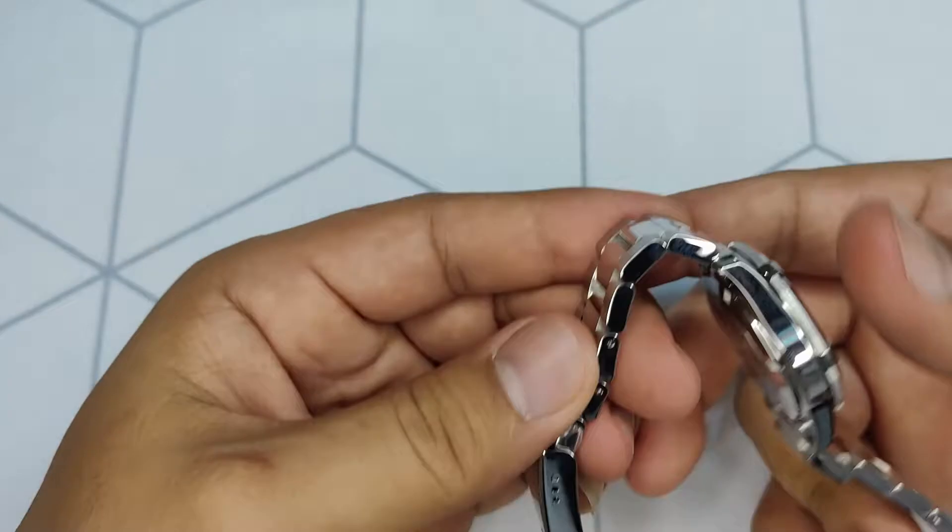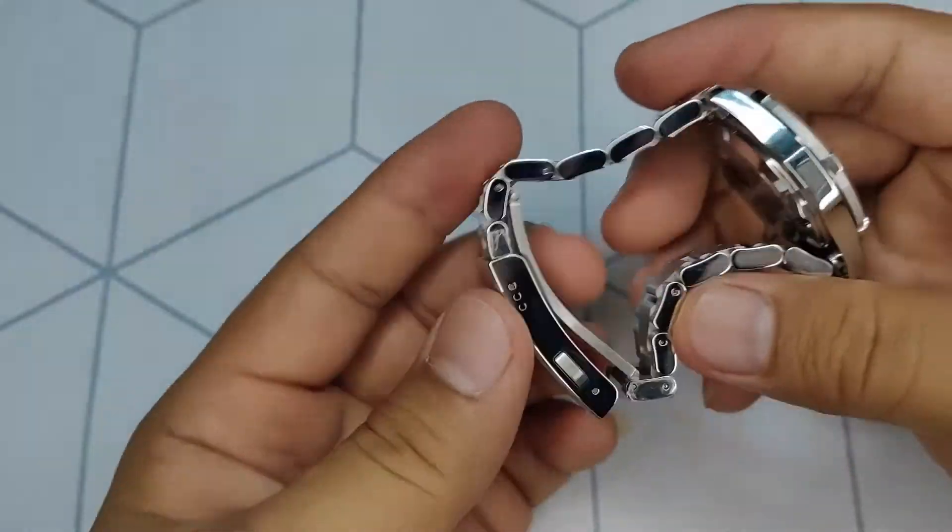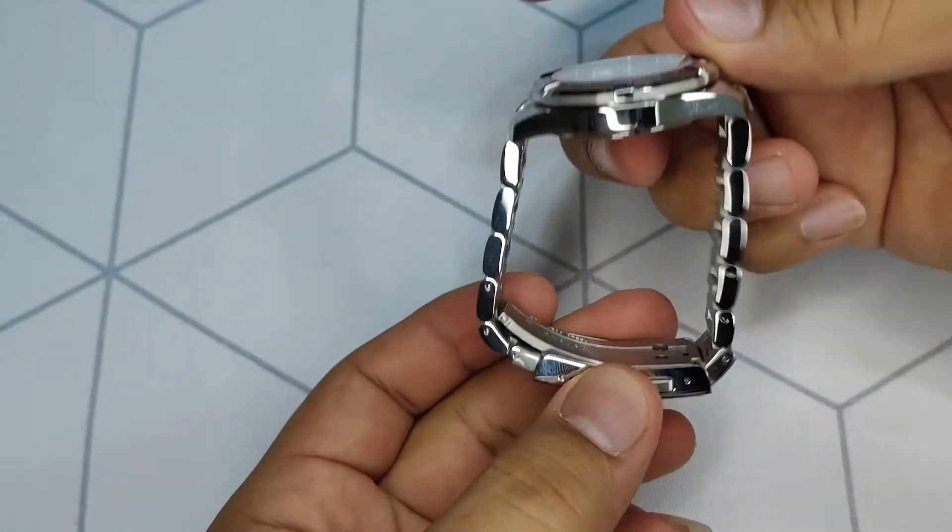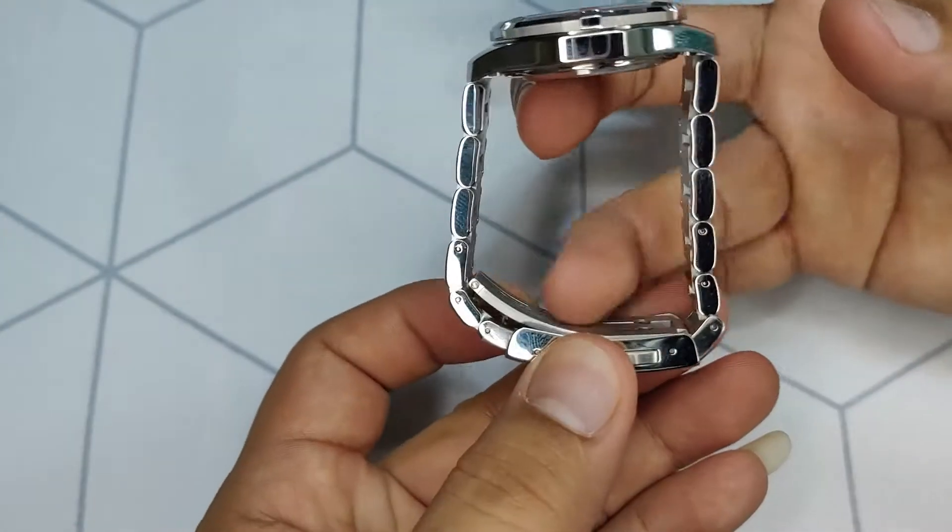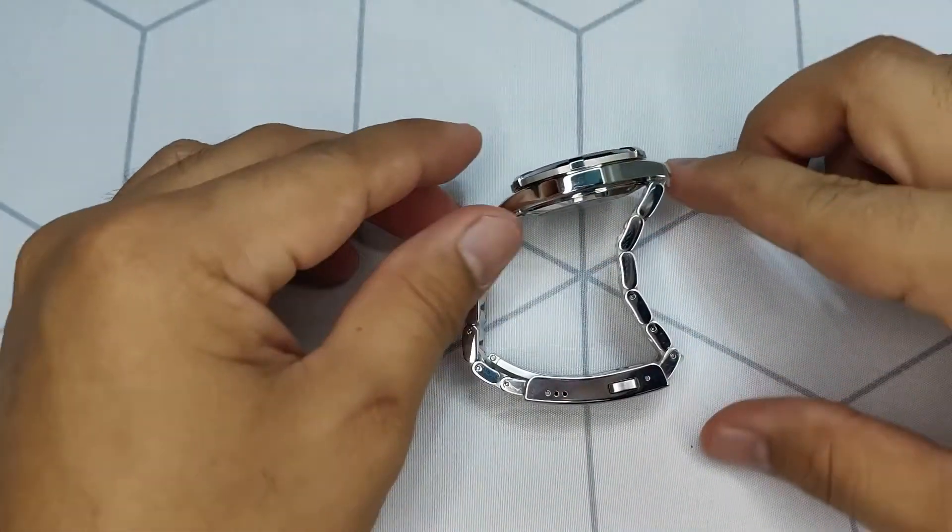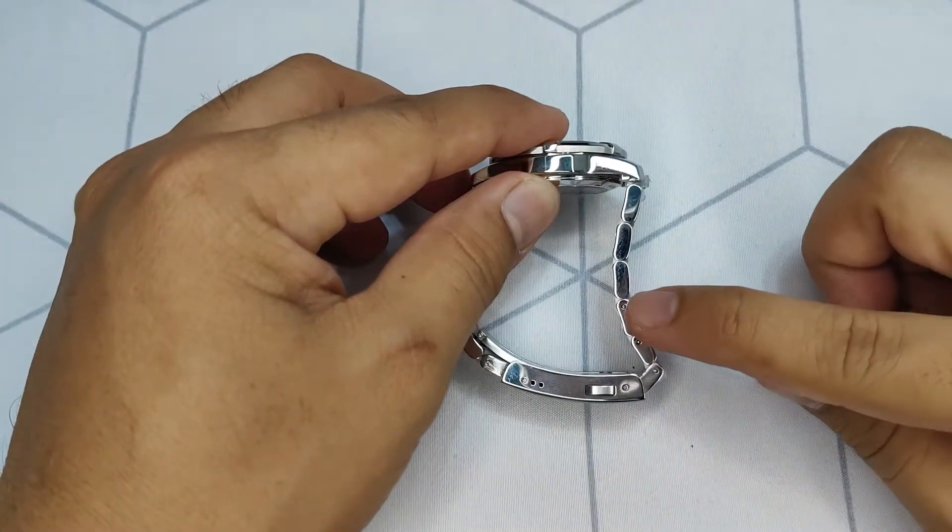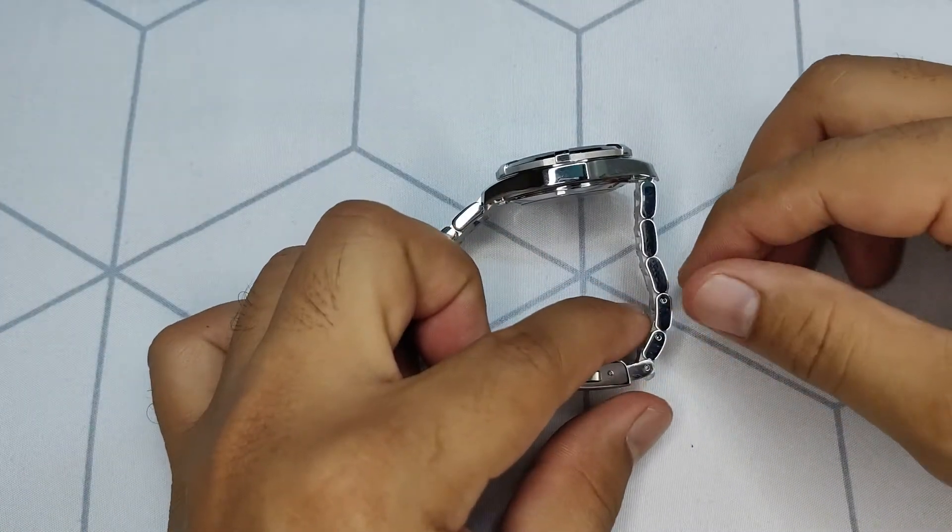Then compare the bracelet length on both sides. And as you can see, one side is longer than the other. Thus, we will be doing the removal of links on the longer side to balance the bracelet.